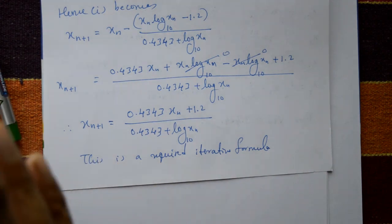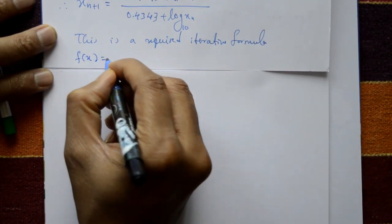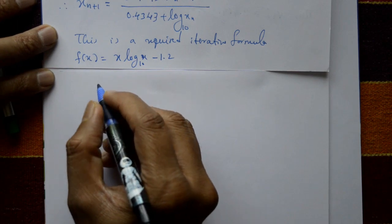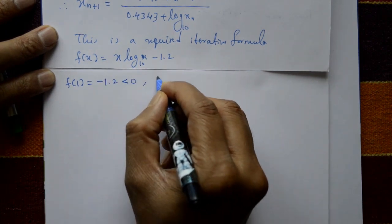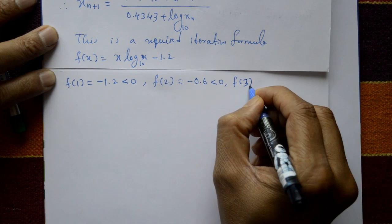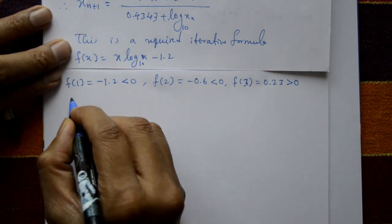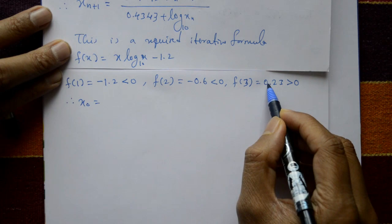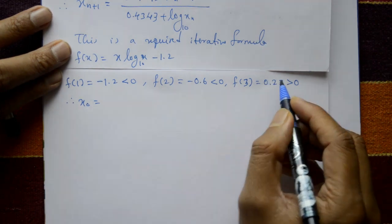Next, find the initial approximation. f(x) = x·log₁₀(x) minus 1.2. Substituting: f(1) = −1.2 (less than 0), f(2) = −0.6 (less than 0), f(3) = +0.23 (greater than 0). Since 0.23 is nearest to 0, the initial approximation is x₀ = 3.